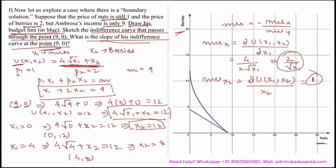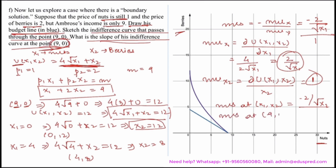Substituting into the MRS formula: MRS = −(2/√x1) / 1 = −2/√x1. Evaluating at the point (9, 0): MRS = −2/√9 = −2/3. This is the slope of the indifference curve at the boundary point (9, 0).